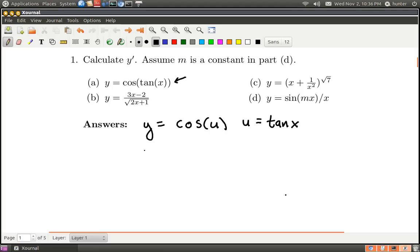Okay, and now we'll just use the chain rule. So when I do y prime, it's going to be the regular derivative of cosine, which is minus sine. U stays the same, and u prime pops out.